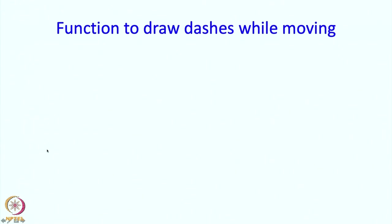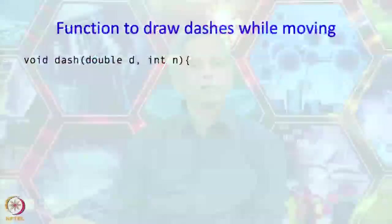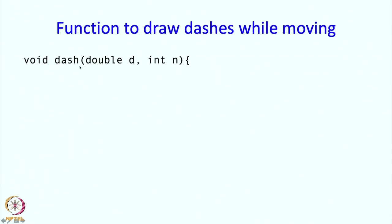So one more quick function: we want to draw dashes while moving. We have our turtle and normally if you say forward it draws a line. Now we are going to draw dashes. The function is called dash, and we pass how many pixels we want to move — distance d — and how many dashes there should be — n.